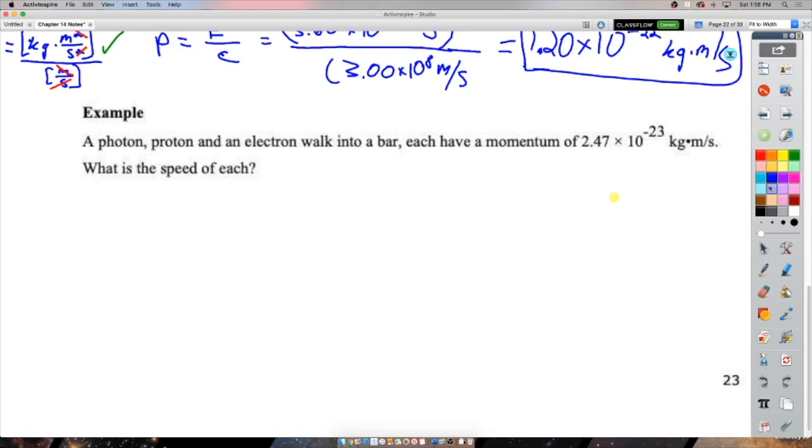Nothing with a mass can ever go the speed of light. Ever, ever, ever. A fundamental law of our universe that arises through Einstein's work on relativity. That's for another year for you. So if they all have the same momentum, what's the speed of each? So for the photon, what's the speed of a photon? Trick question. Always that. Never say anything other than that for the speed of a photon.